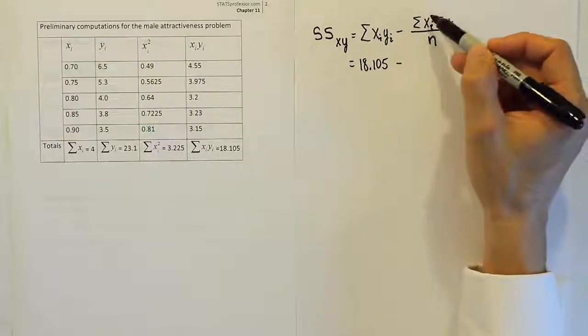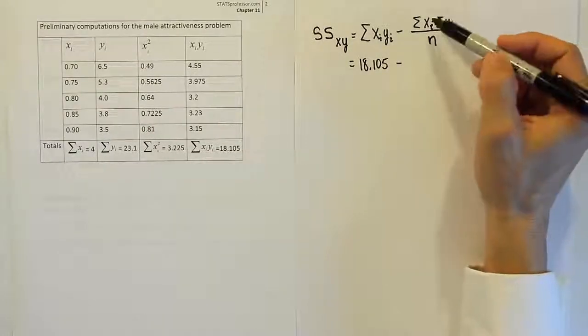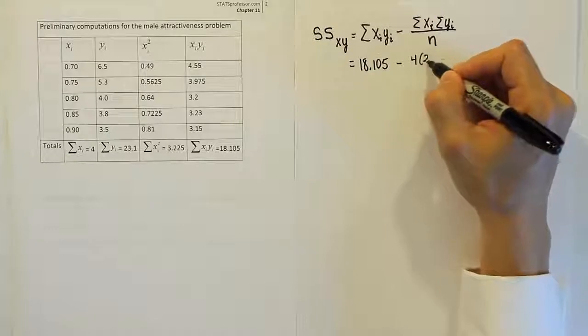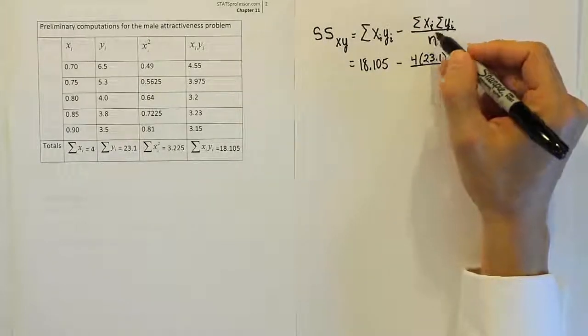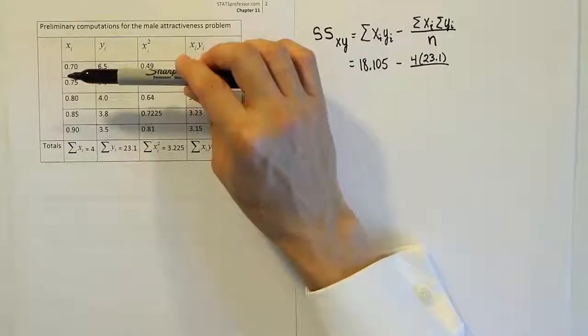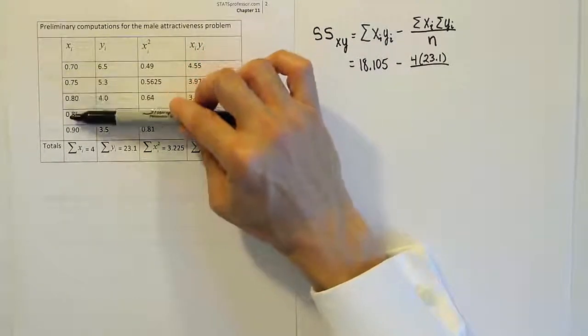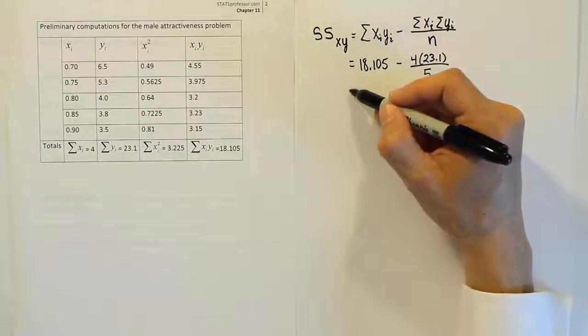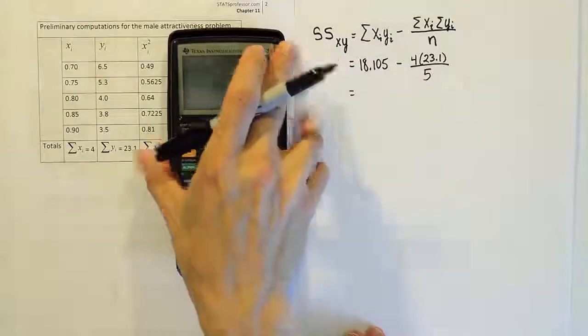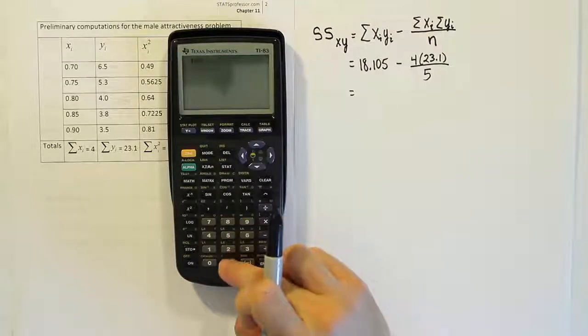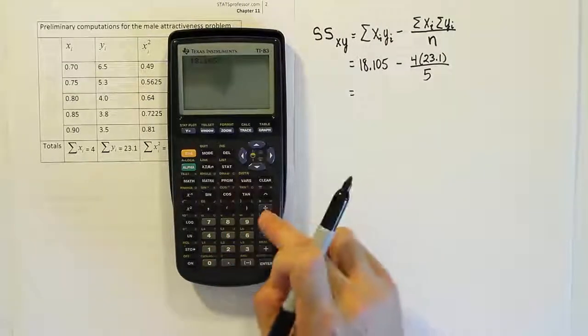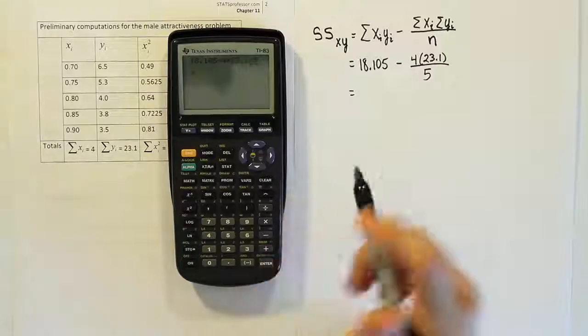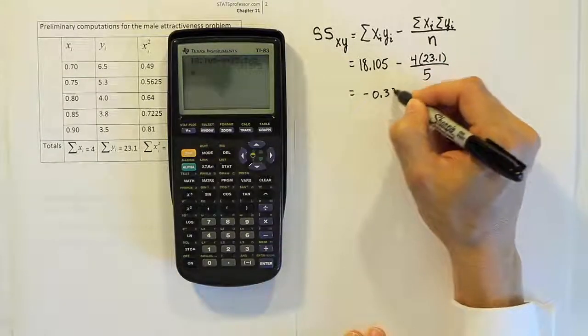Then we subtract off the sum of the x value times the sum of the y value divided by the sample size. The sum of the x value is 4 times the sum of the y value, which is 23.1, all over the sample size. The sample size is the number of ordered pairs we were given: 1, 2, 3, 4, 5 xy ordered pairs. Let's work that out in our calculator. We'll have 18.105 minus 4 times 23.1 divided by 5, and we get negative 0.375.